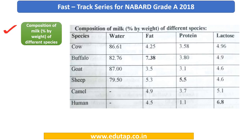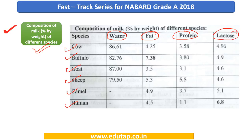First we shall see the composition of milk by percentage weight of different species. There was a question from this in our preliminary examination. There might be a possibility of it coming in the mains as well. The species covered are cow, buffalo, goat, sheep, camel and human. You need to know the water percentage, fat, protein and lactose. What you need to do is identify which species has the greatest percentage or the lowest one — that is going to help you out.